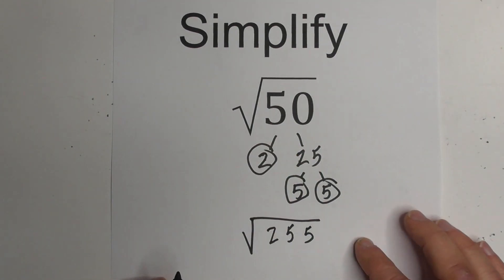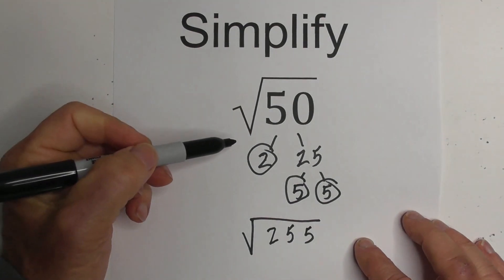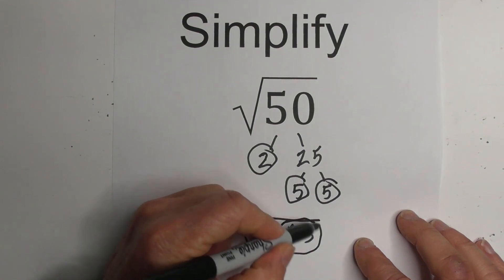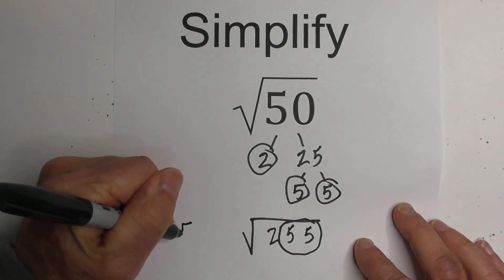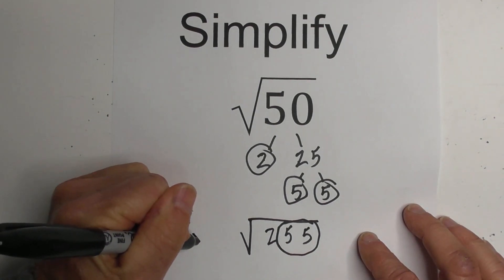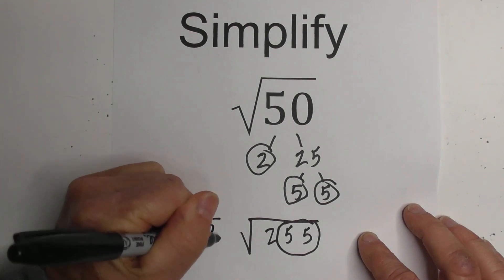Now since it is a square root, I can pull out pairs and so I have one pair of 5's. So when I pull them out it becomes a single 5 and then the 2 stays underneath the square root sign.